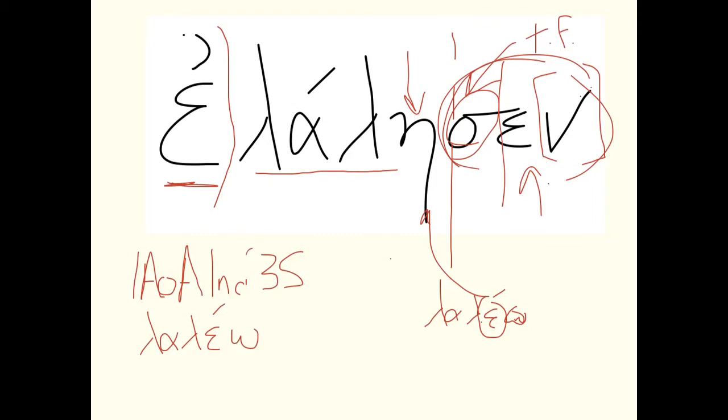And so the key indicators for me to know that this is a first aorist over against a second aorist is I've got an augment plus the sigma tense formative. Hopefully that short video has helped to explain how to recognize a first aorist verb and how to parse it.